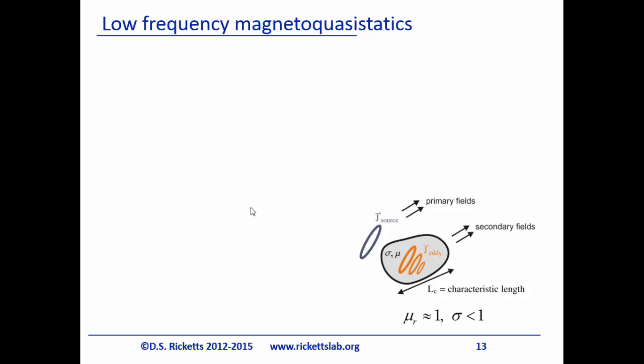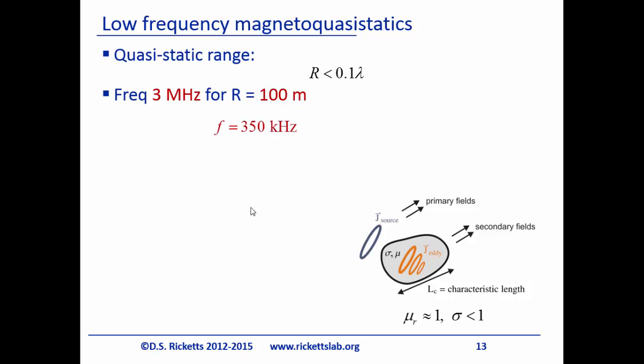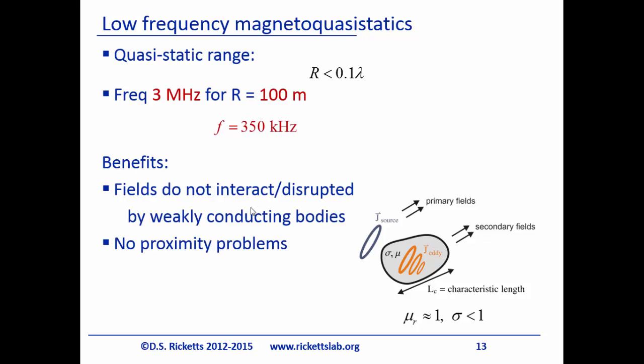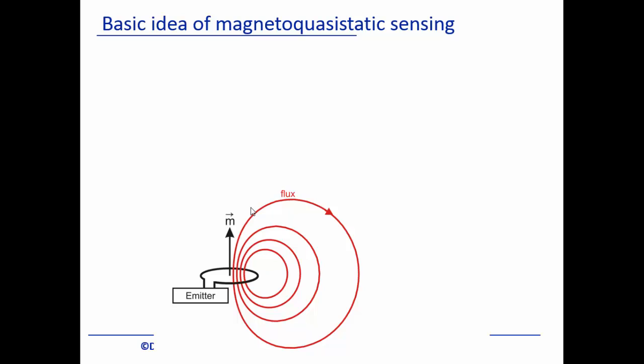We're operating in the quasi-static region — less than a tenth or a hundredth of a wavelength — so we really see the static fields. At 350 kilohertz the wavelength is about a kilometer. The fields don't interact with the body because of something electrical engineers know called skin depth. If the object is less than a skin depth in size it's transparent — the human body at 350 kilohertz has a skin depth of around a meter. Anything much larger than a human could start to block it, but a helmet or similar object, the waves go right through.